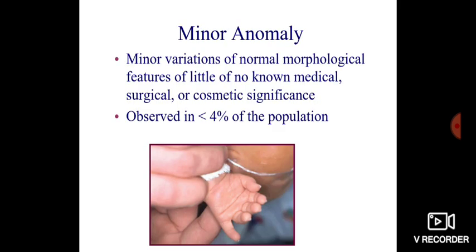Minor anomalies are minor variations of normal morphological features of little or no known medical, surgical, or cosmetic significance. They are seen in less than 4% of the population.